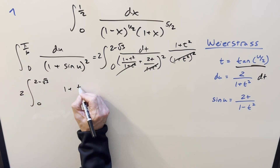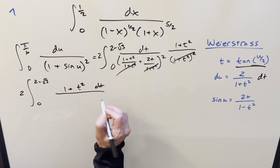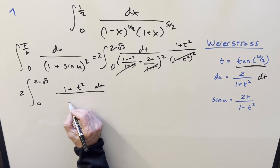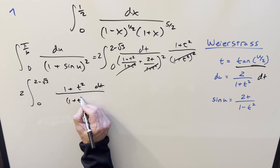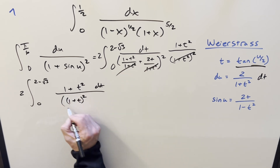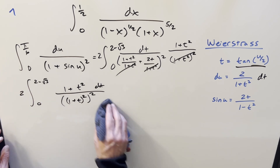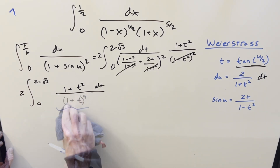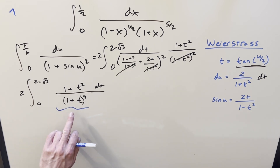Now t² plus 2t plus 1 is the same as (1 plus t)², and squared again gives (1 plus t)⁴. So the integral is (1 plus t²) dt over (1 plus t)⁴. This integral is not that bad. We could do it with algebra, but it's kind of nice to do it with a u-substitution to clean it up. If I do u = 1 plus t, then we have u to the fourth and it all becomes power rule.